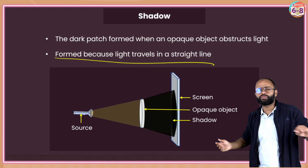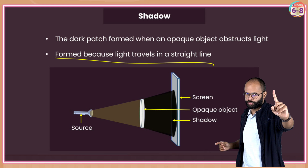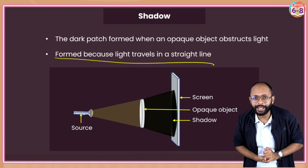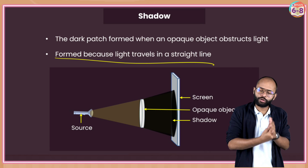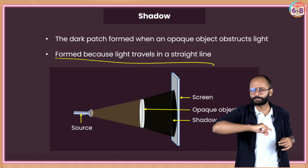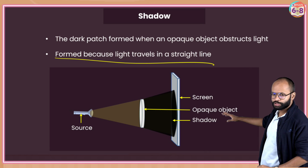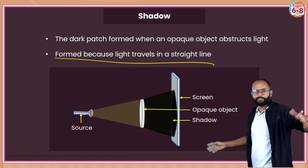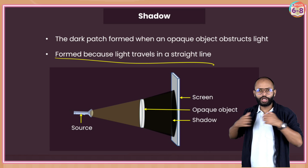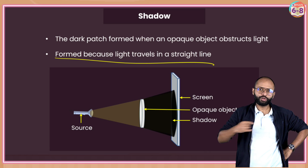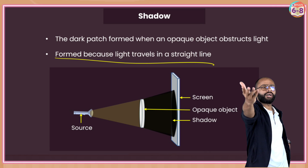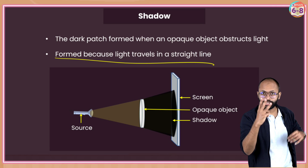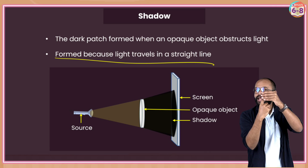Three things you need to form a shadow. First, you need a light source. Second, you need an opaque object - a transparent object cannot form a shadow. Third, you need a screen. Imagine you are standing on a cliff with a light source behind you - do you think your shadow will be formed? No. Because you don't have a screen. You need three things: source, opaque object, and the screen.